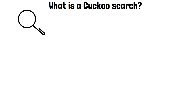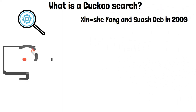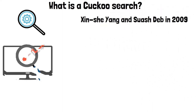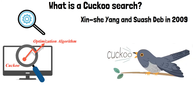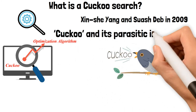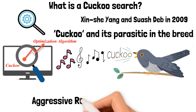What is a cuckoo search? Cuckoo search is an optimization algorithm developed by Xin-She Yang and Suash Deb in 2009. The cuckoo optimization algorithm is based on the life of a bird called the cuckoo and its parasitic breeding. Cuckoos are fascinating birds, not only because of the beautiful sounds they can make but also because of their aggressive reproduction strategy.